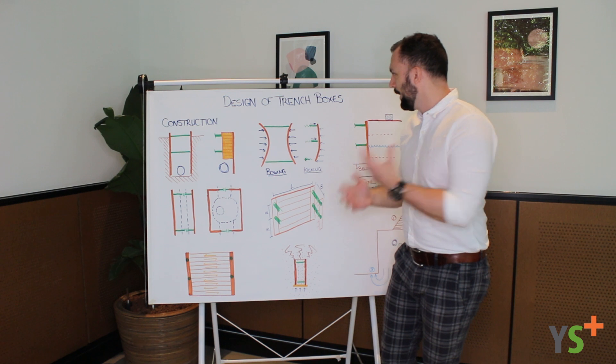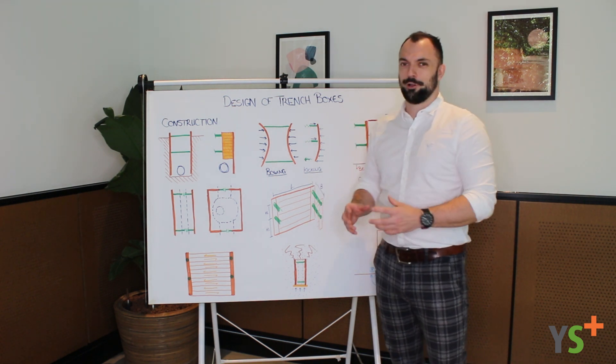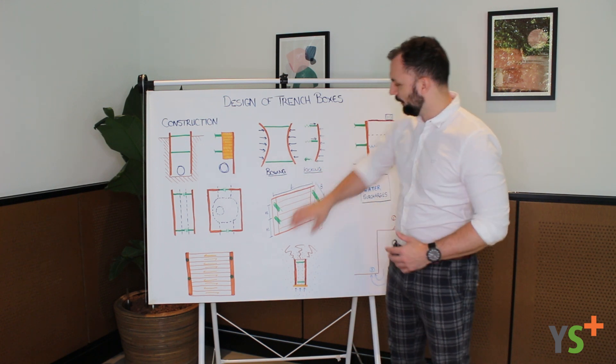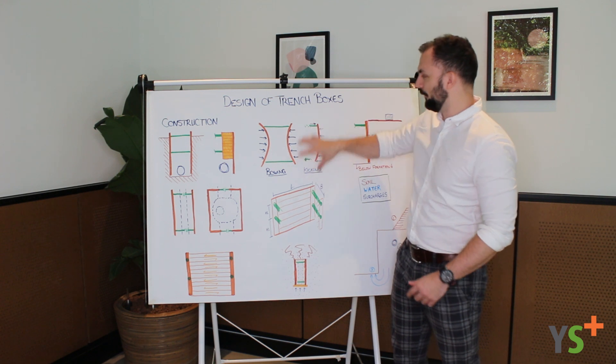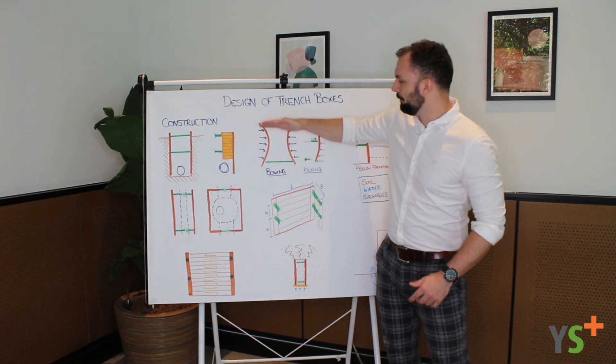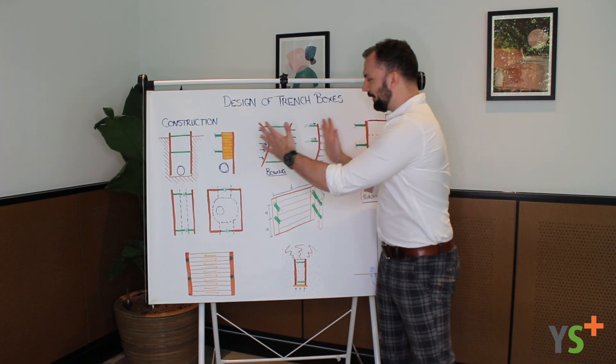The way that we design trench and manhole boxes is very similar. First of all, we look at the pressure coming on from the soil pushing on this one-way spanning system and that causes bowing. So if we're looking in plan again now, looking between the two struts, the ground wants to bend these boxes inwards and we call that bowing moment.